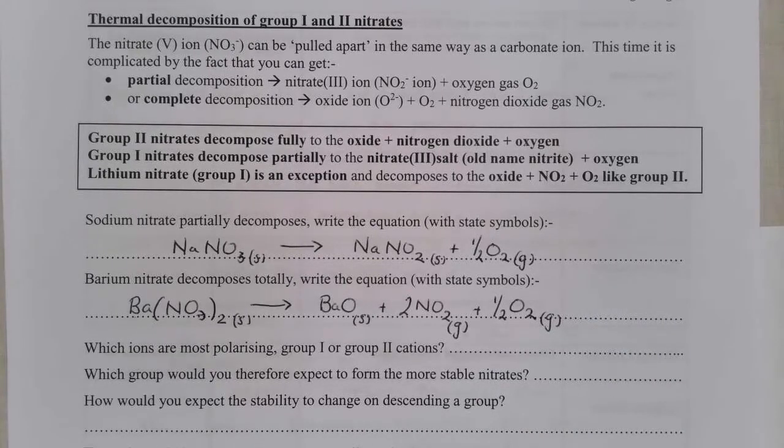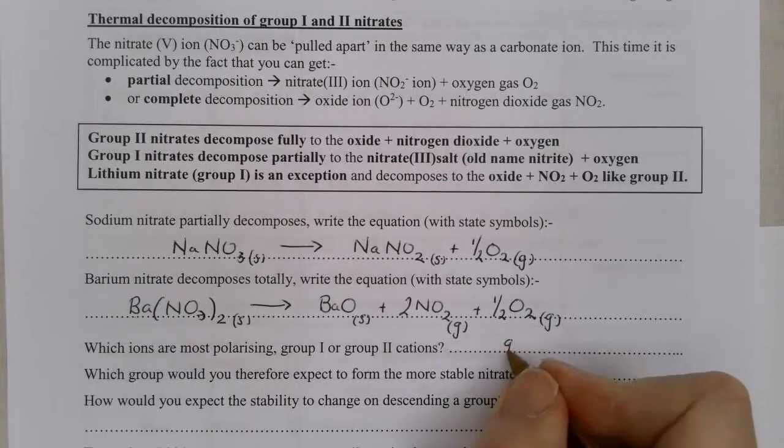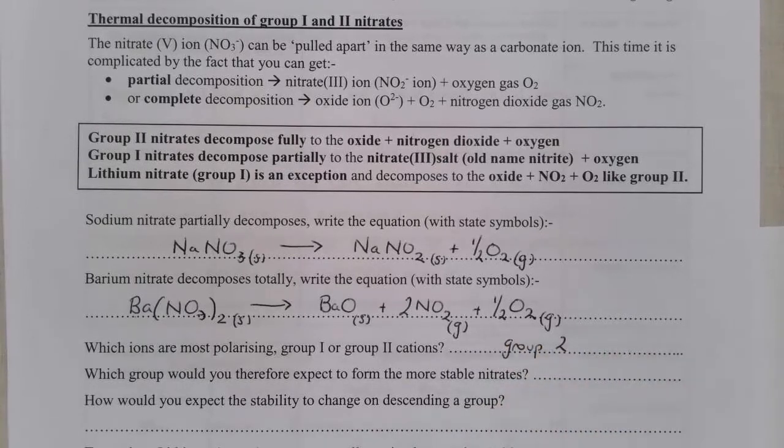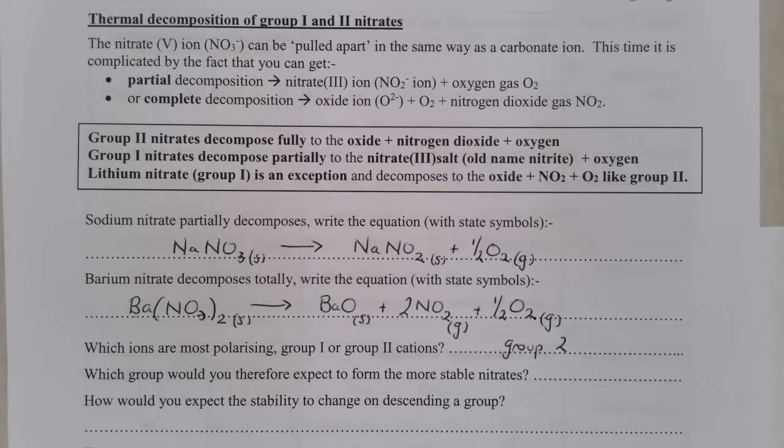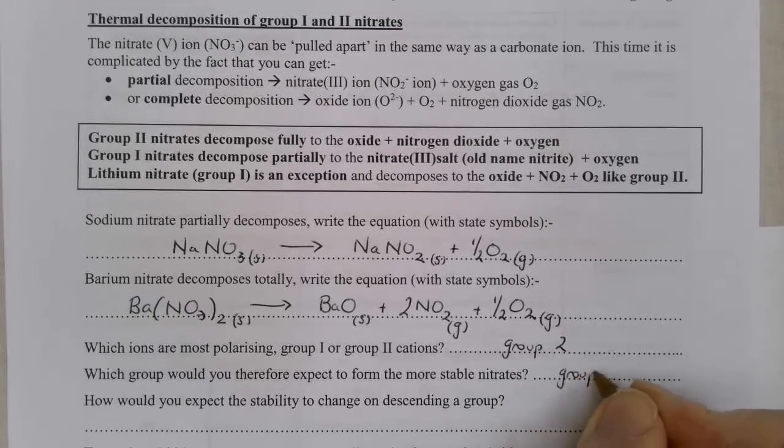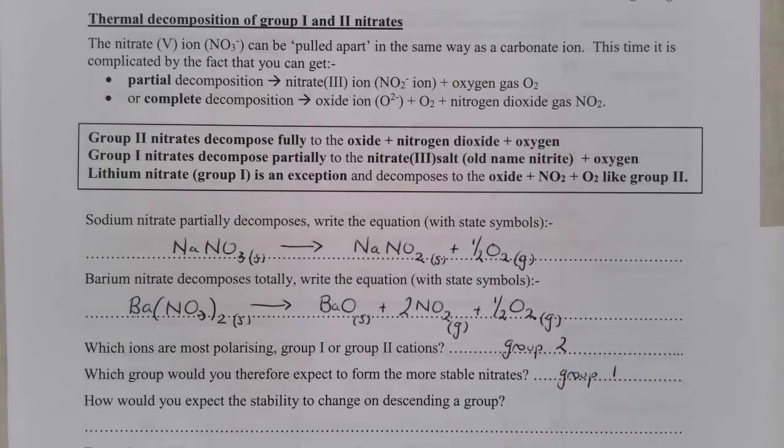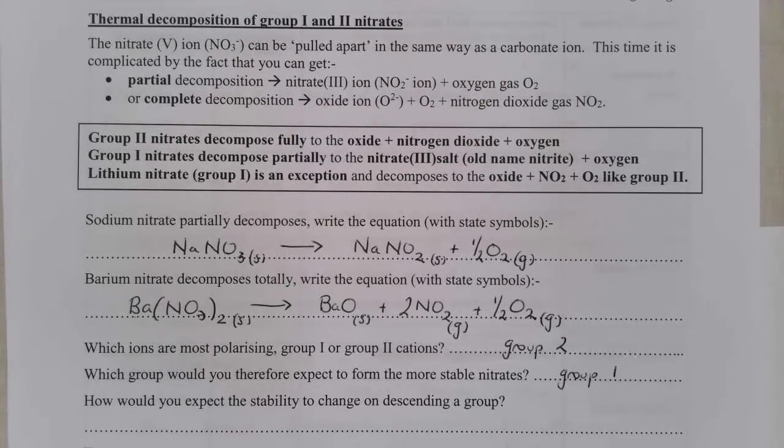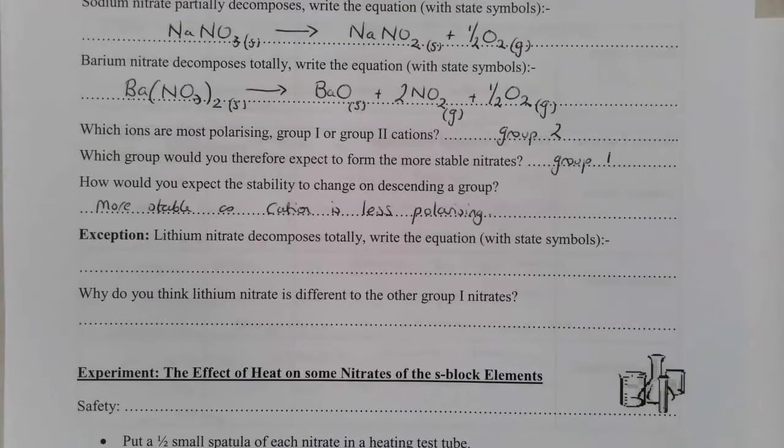So again it's down to the polarising ability of the cations, and Group 2 have the most polarising cations. Therefore it is Group 1 which form the more stable because they're less polarising. As you go down the group the stability will increase, and that doesn't matter if you're Group 1 or Group 2 because as you go down the group they become less or the ions become less polarising. Most Group 1 nitrates only partially decompose.